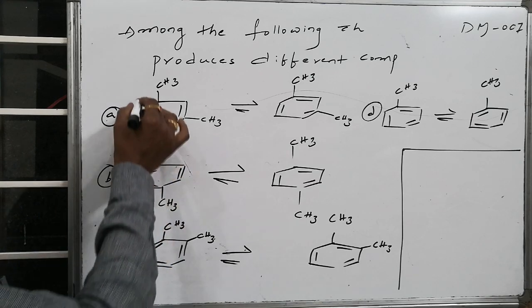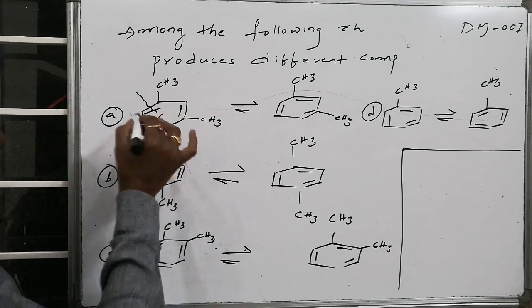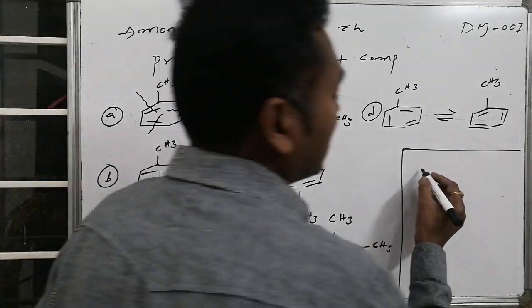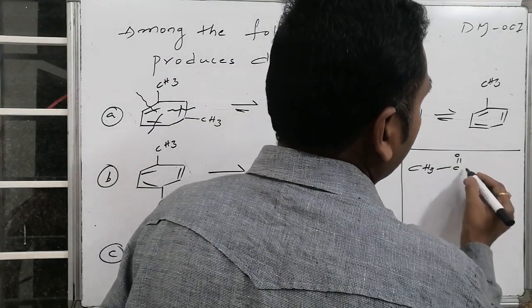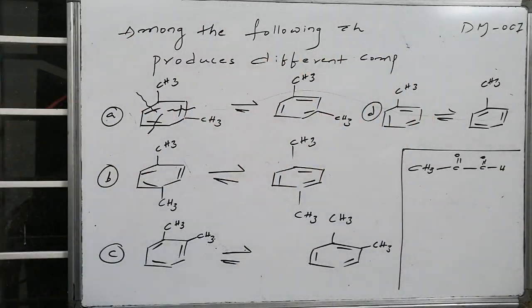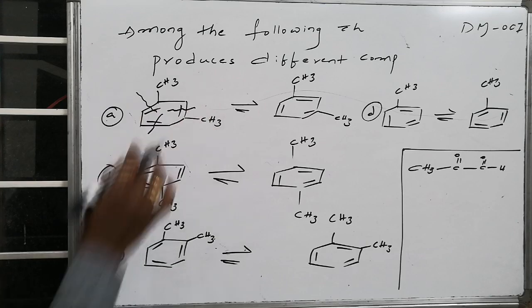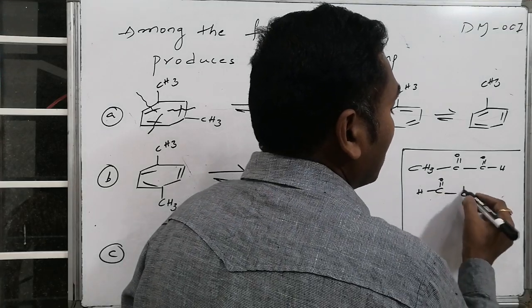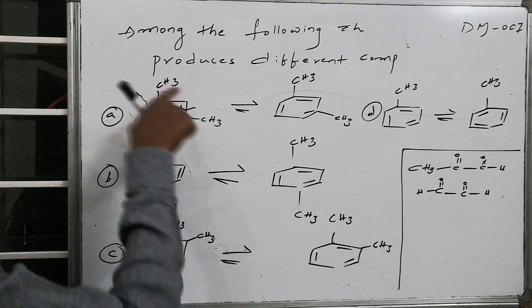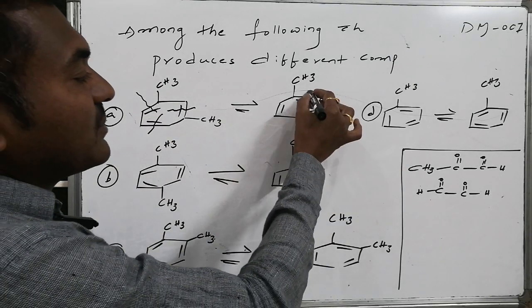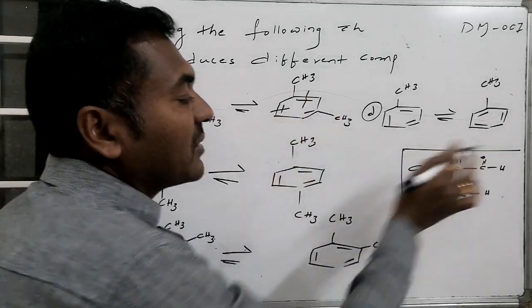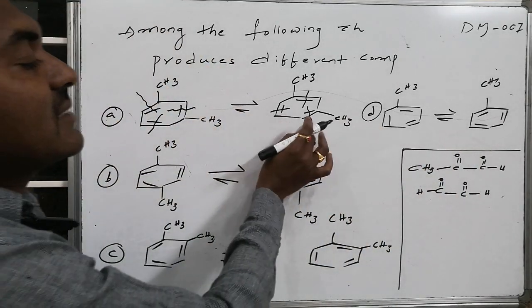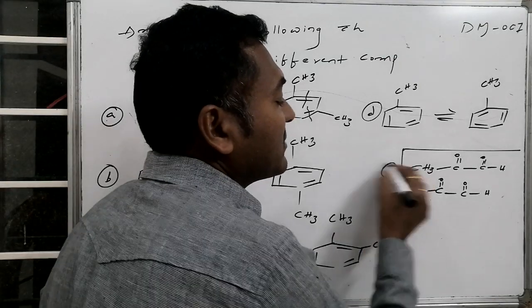For compound A, ozonolysis cleavage of the double bonds gives: methyl–C=O (aldehyde) and –C=O–C=O (glyoxal). From the different Kekulé cleavages, compound A produces methylglyoxal and glyoxal as products.